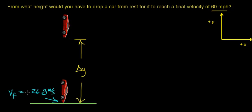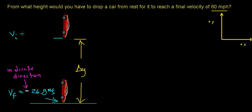One thing you need to take into account is the direction that this car is traveling. This car is going to be accelerating from rest in the downward direction, so we need to include the negative sign to indicate direction. If this is our coordinate system, this car is going to be traveling in the negative y direction. The initial velocity is 0 meters per second — this car is going to be released from rest. In the course of solving this problem, we're going to find that the distance we have to drop this car is going to be less than the distance it needs to accelerate in the horizontal direction.